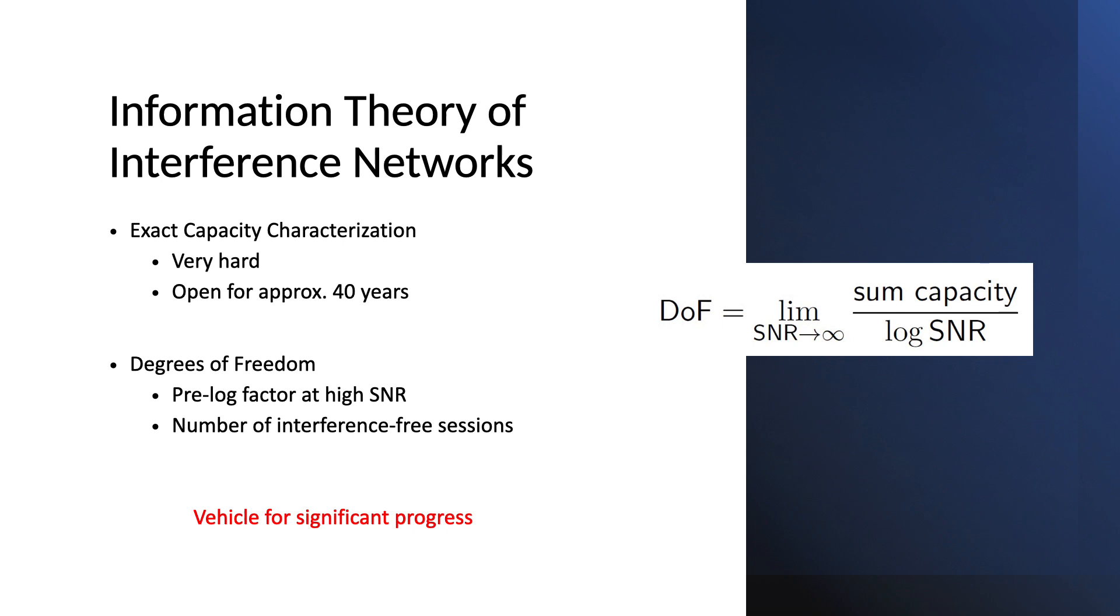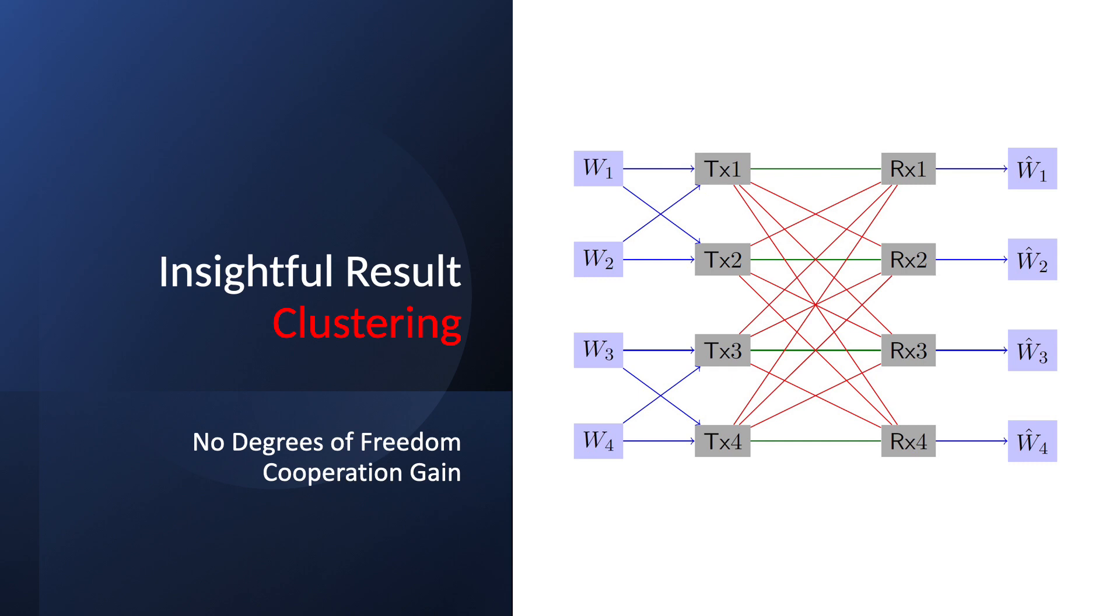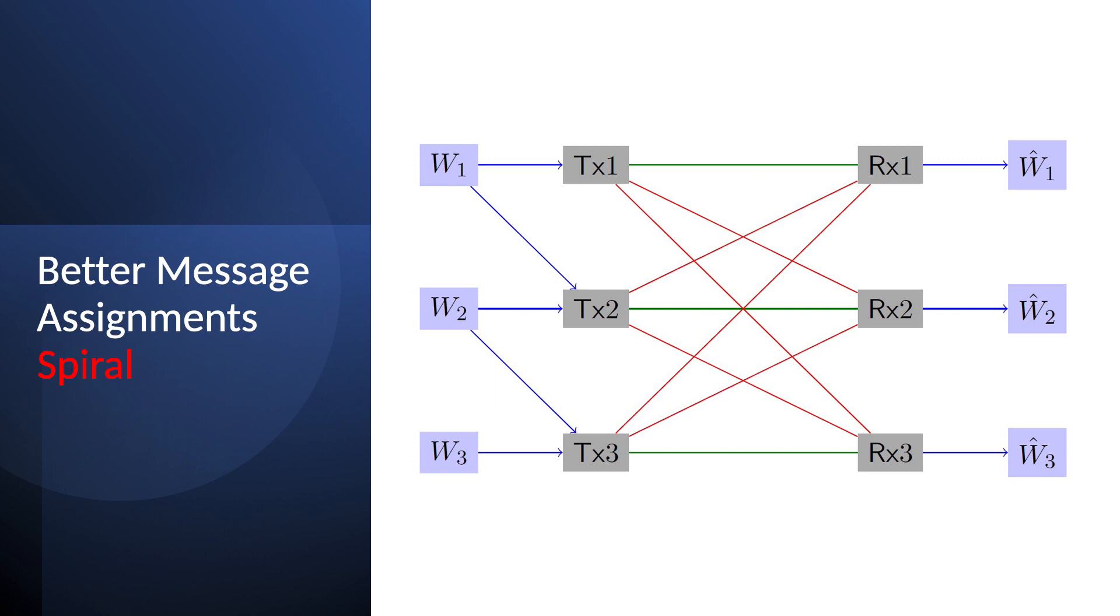This problem is very difficult. The exact capacity characterization is not known even for the simplest interference channels, but instead we have other metrics that are more rough and allow us to make progress towards more practical problems that we have nowadays. For very large networks, we can answer questions about the potential of cooperation if we do clustering versus if we do something that's not necessarily clustering, but a more distributed assignment of messages or words over transmitters.